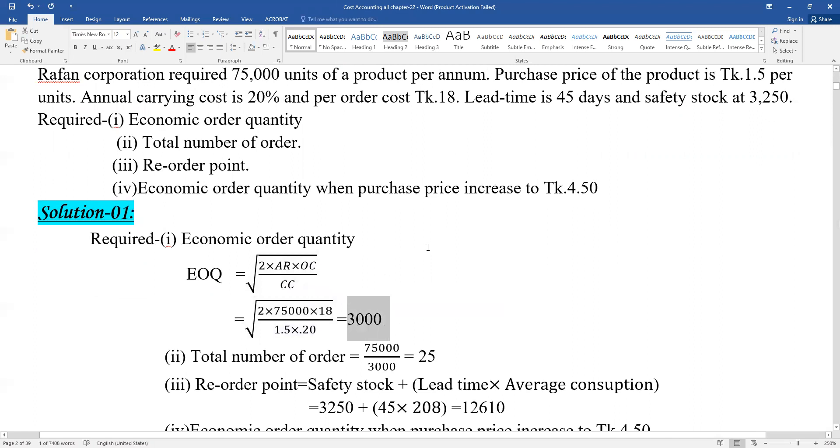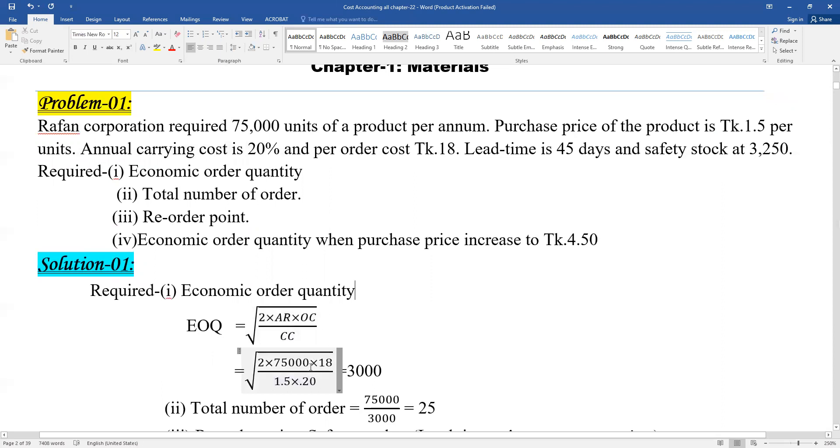1.5 times 20 percent equals 0.30. This is the carrying cost we'll use in the formula for the annual required calculation.